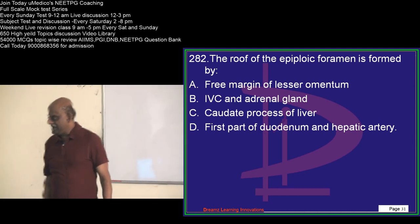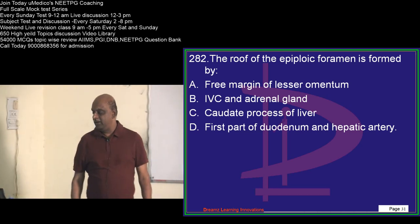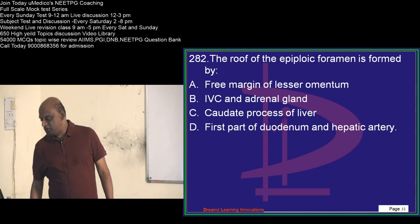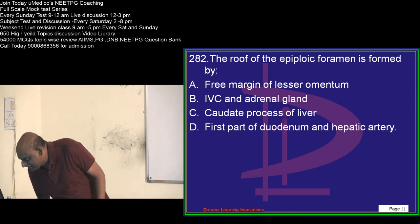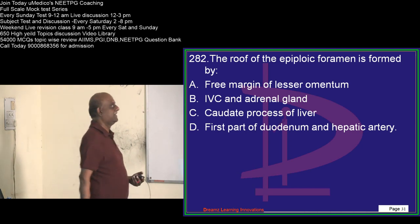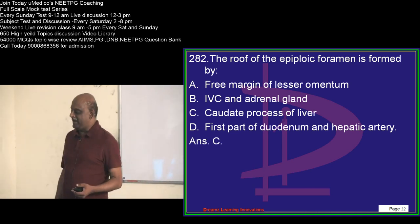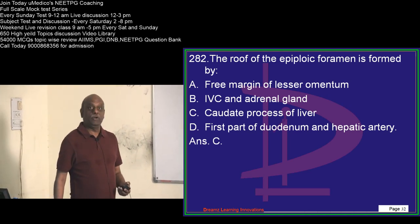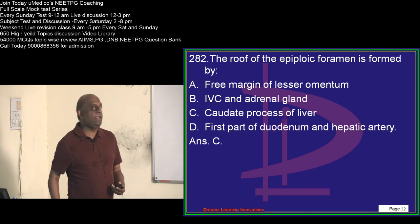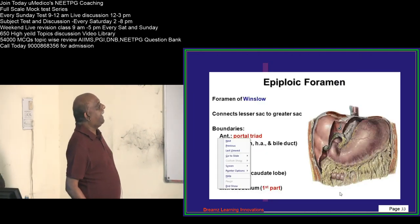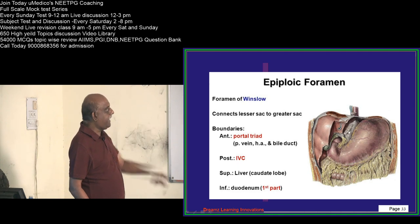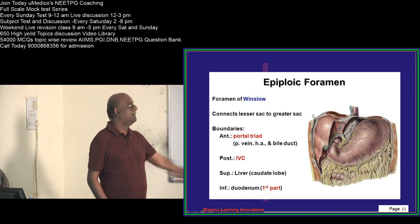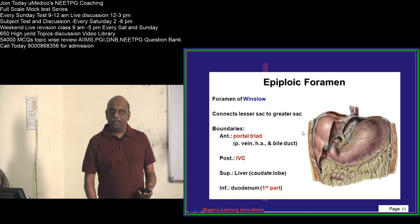Epiploic foramen — how many of you are right? Everyone is saying caudate process. For those who answered option A, you need to arise, awake, and revise. Anteriorly you have the portal triad. Posteriorly there is the IVC. Superiorly there is the caudate lobe of the liver. Inferiorly there is the first part of the duodenum. These are the boundaries of the epiploic foramen.